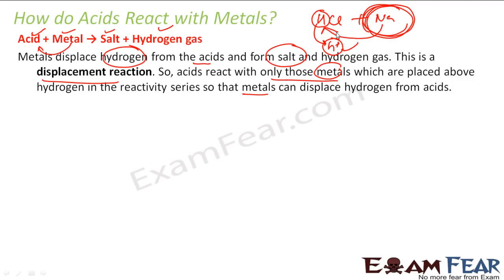Mostly in class 11th we will understand why a substance is more reactive or less reactive. It all depends on the valence shell, the number of electrons it has, and the stability you want to achieve. But for now, just understand that sodium has to be more powerful than hydrogen to displace hydrogen.